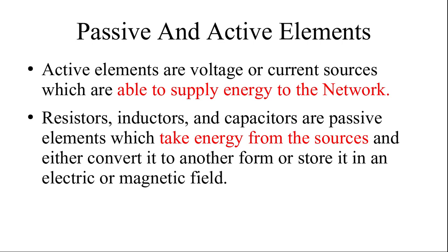To a particular network, if some element is giving energy — if it is producing or supplying energy like current or voltage to the network — then it is known as an active element. For example, a battery is providing energy to the network, so that is called an active element. A passive element is just the opposite: it receives energy from the source. Examples are resistor, inductor, and capacitor — these are passive elements which take energy from the source.